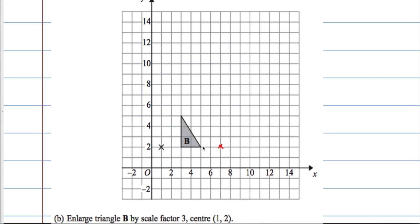This vertex here is 1, 2, 3, 4 away. That means the new vertex should be 4, 8, 12 away. So, 1, 2, 3, 4, 5, 6, 7, 8, 9, 10, 11, 12.